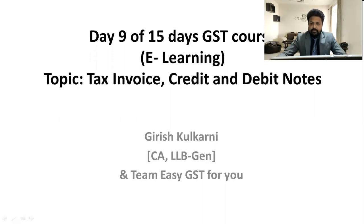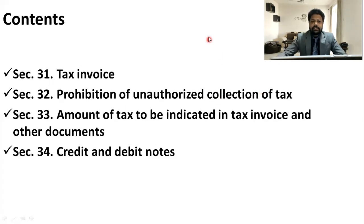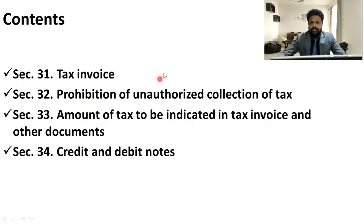There is also a lot of confusion here, maybe because of the previous concepts in our mind. Today we are going to discuss sections 31, 32, 33, and 34 of the CGST Act: tax invoices, prohibition of unauthorized collection of tax, and the amount of tax to be indicated in tax invoices, credit notes, and debit notes. We will try to cover all these four important sections.